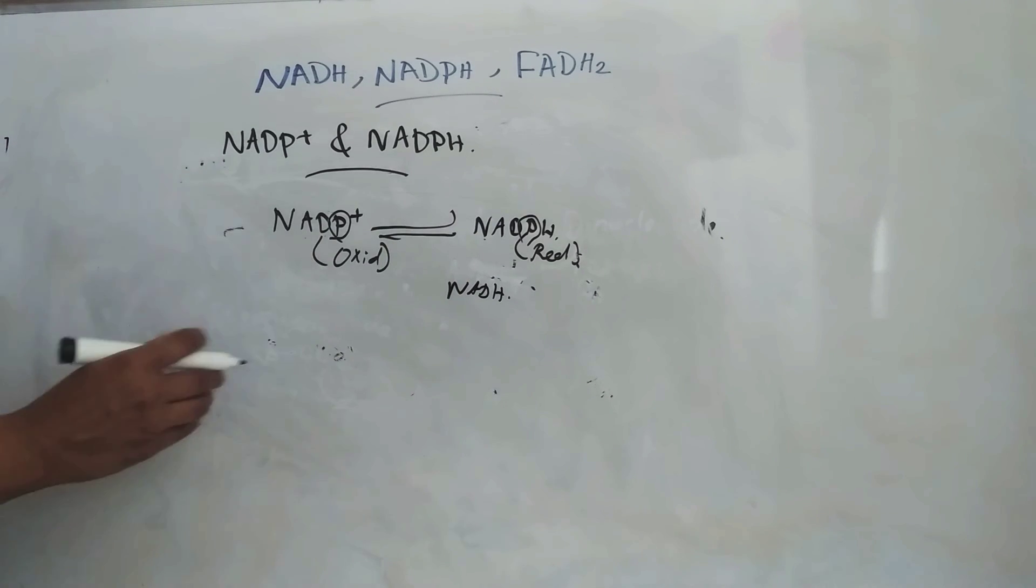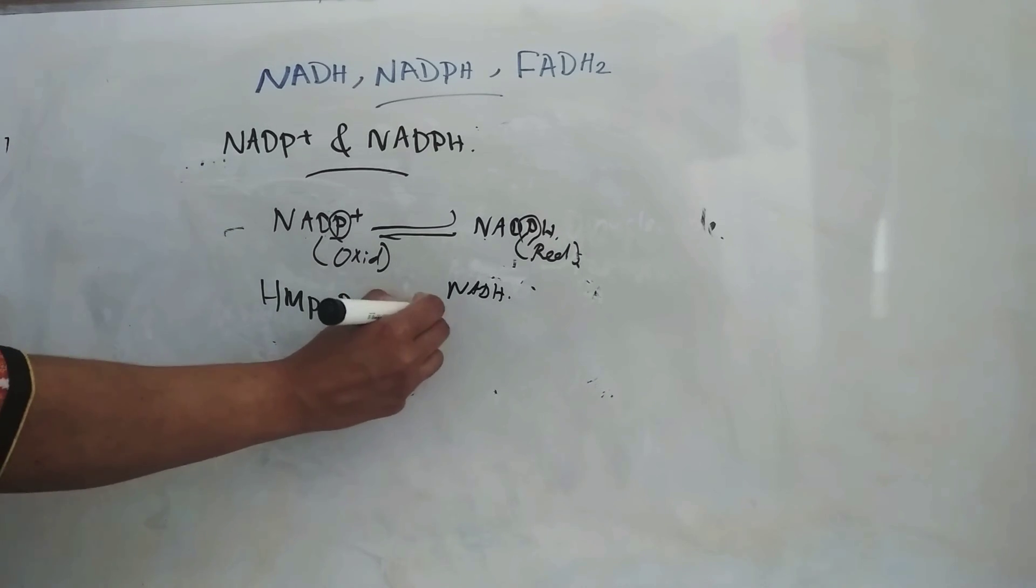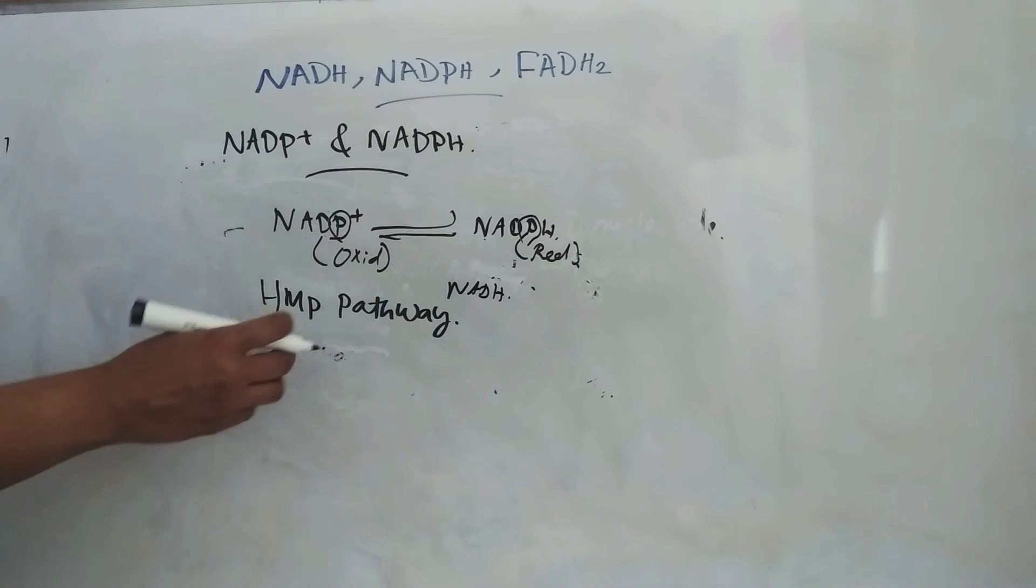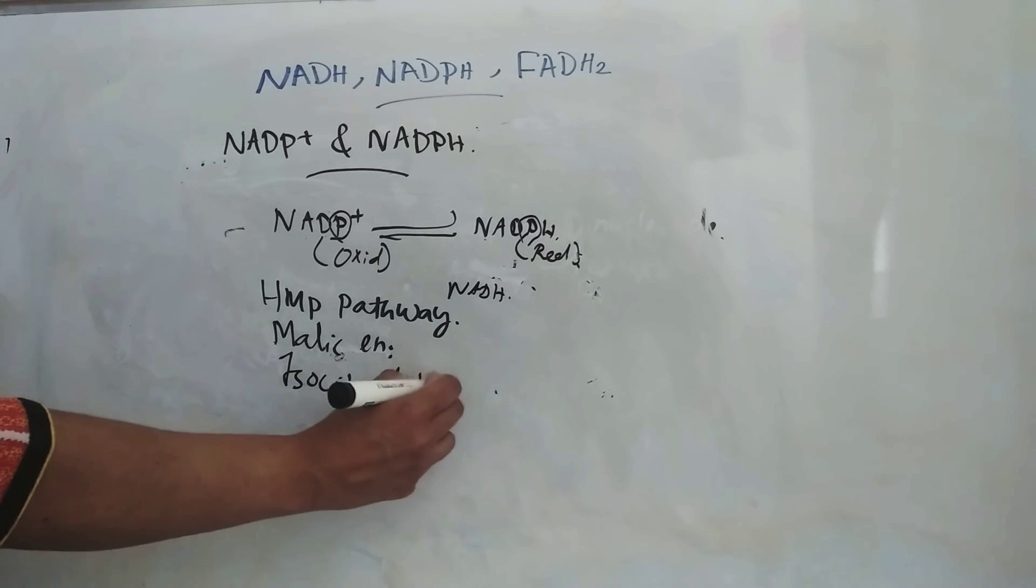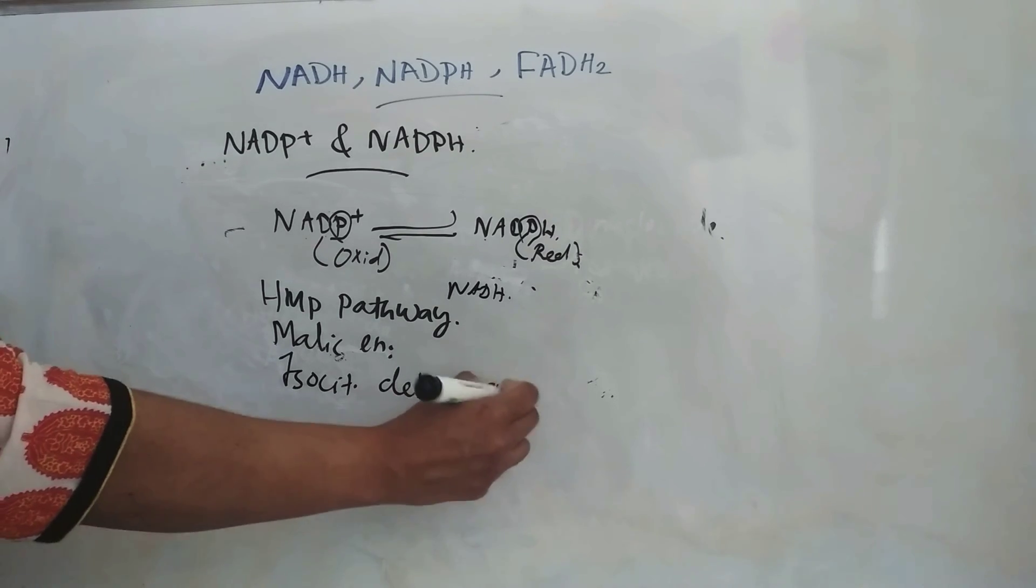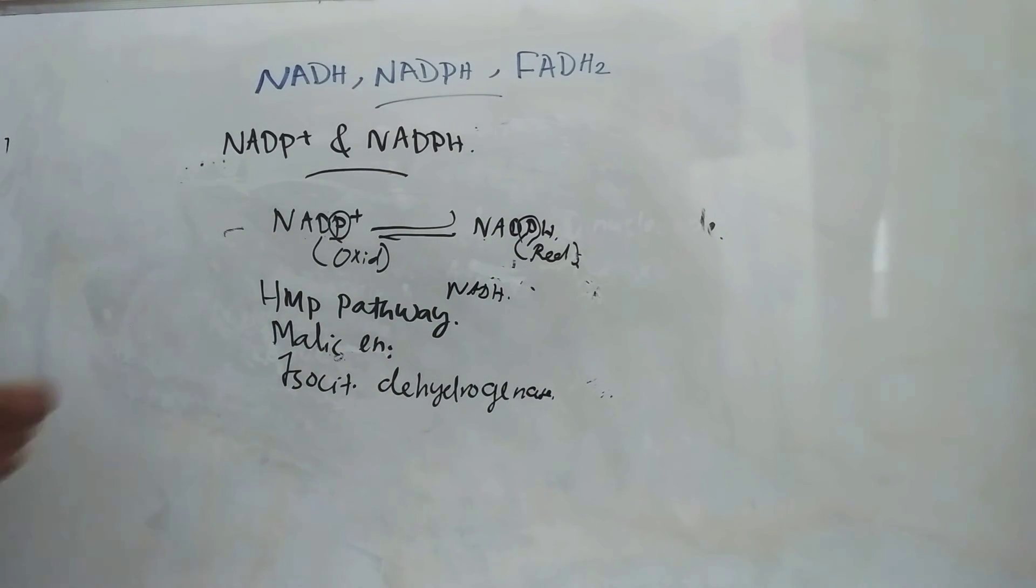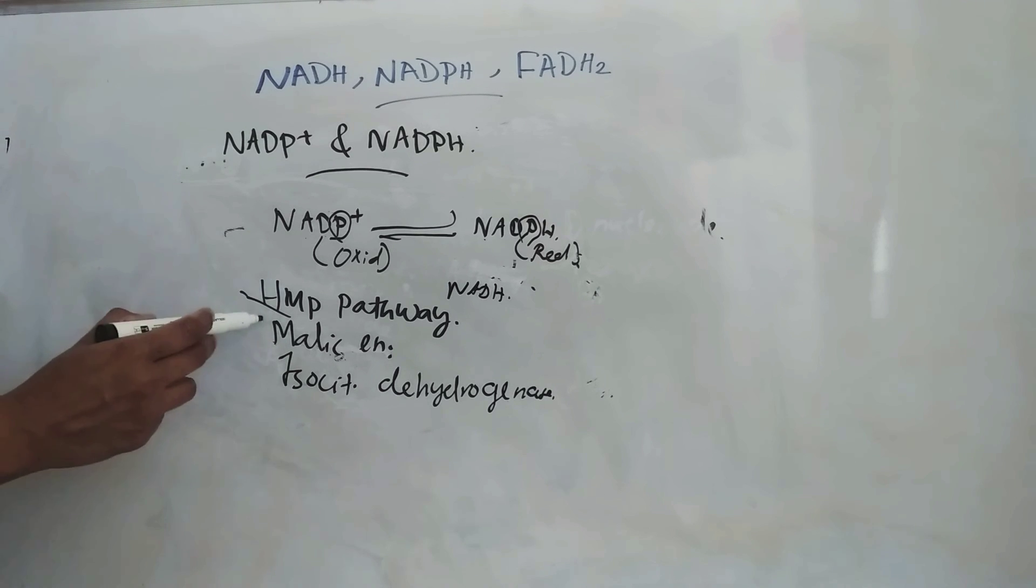This NADPH is produced from HMP pathway. This is the major source of NADPH in our body. There are other two minor sources. These are malic enzyme and cytosolic isocitrate dehydrogenase enzyme. These are the minor sources of this NADPH. Major source is HMP pathway.